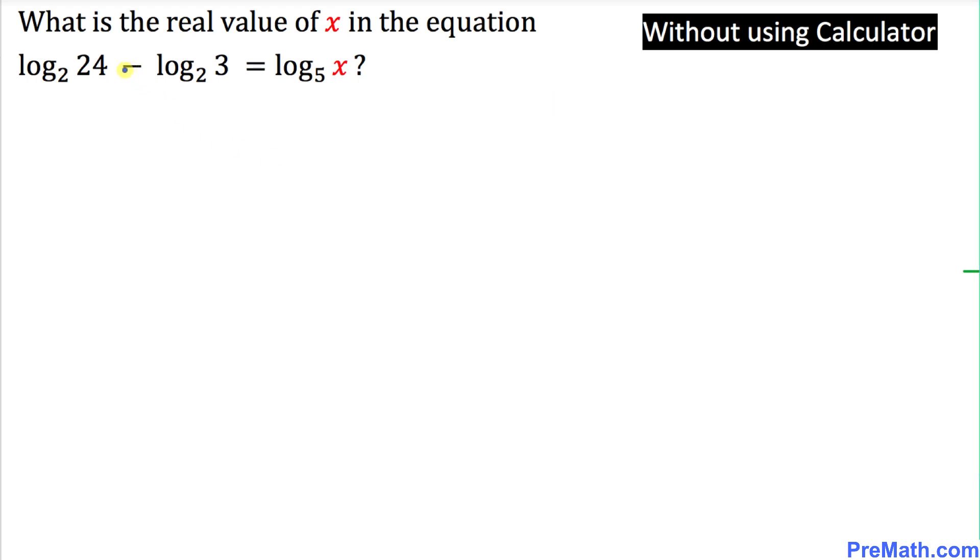So let's go ahead and focus on the left-hand side of this given equation, this part. And we are going to use this logarithmic fact, quotient rule: log of a divided by b is always equal to log of a minus log of b.